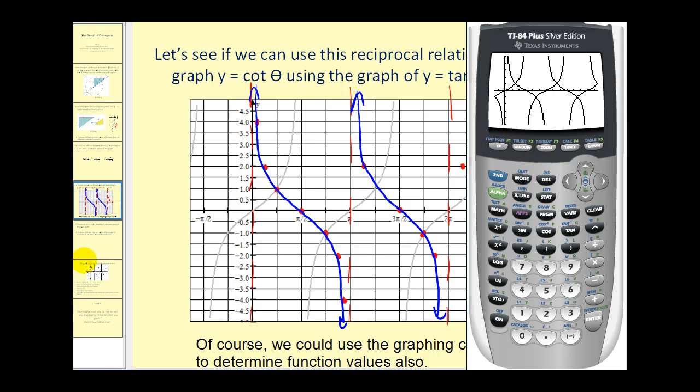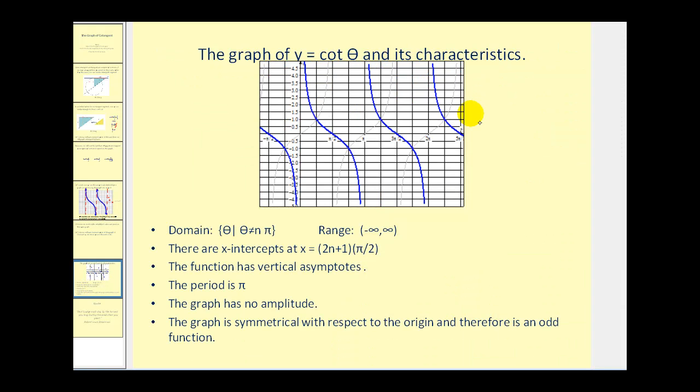Let's summarize the key components of the graph of y equals cotangent theta. The domain would be any angle such that theta is not equal to a multiple of pi radians, because that's where we have our vertical asymptotes. The range would be from negative infinity to positive infinity.